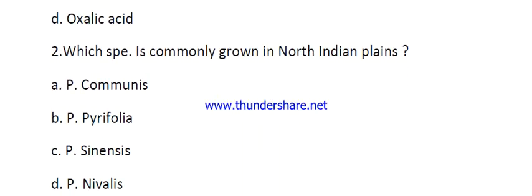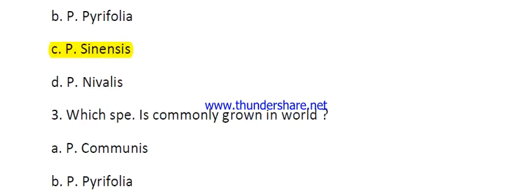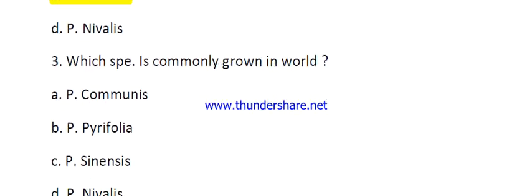Question number two: which species is commonly grown in North Indian plains? Options are Pyrus communis, Pyrus pyrifolia, Pyrus sinensis, and Pyrus nivalis. The right answer is Pyrus sinensis. This is generally known as sand pear or Chinese pear.